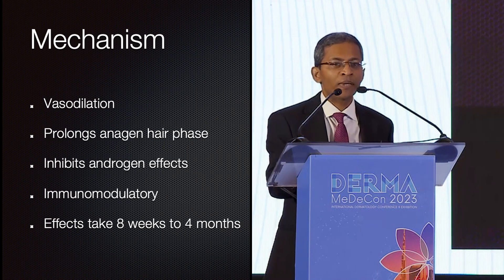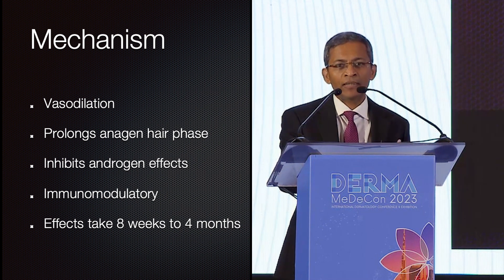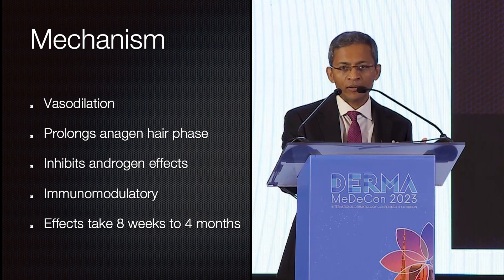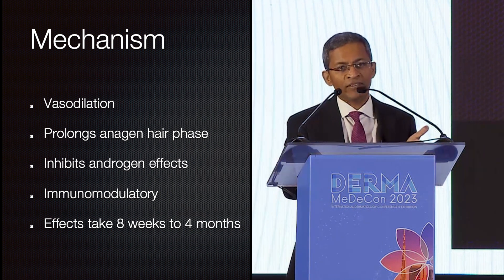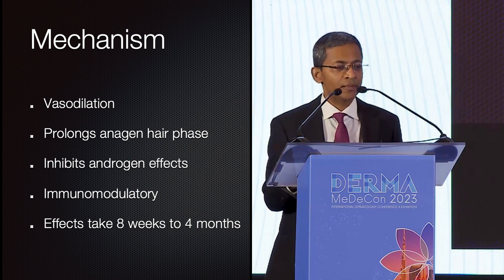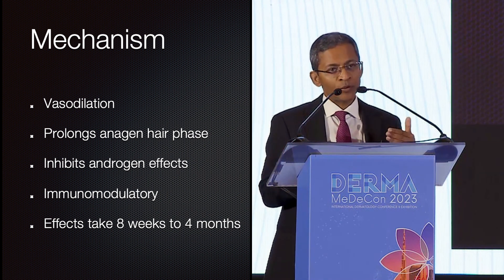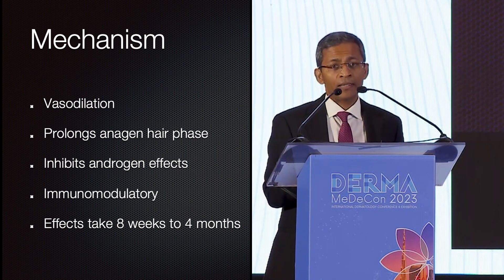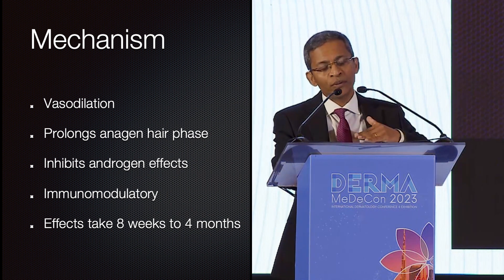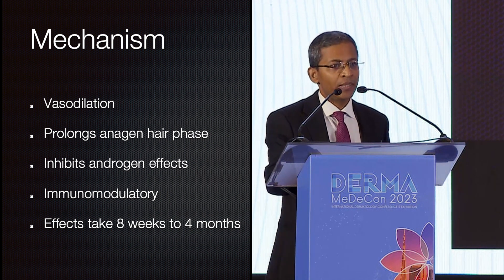What are the possible mechanisms? There are quite a few postulated. First, it's a vasodilator — that's how it works in hypertension. Vasodilation means more nutrients and blood flow going to the hair follicles, possibly increasing hair strength. It also seems to prolong the anagen phase. We know hair goes through three cycles: anagen, catagen, and telogen. Prolonging the anagen phase gives thicker hairs and more density. It also seems to have an inhibitory effect on androgens at the level of the hair follicle. And finally, there seem to be immunomodulatory effects — studies show that the number of T lymphocytes is reduced at the level of the hair follicle, which may explain why it works on some immunological hair loss conditions.